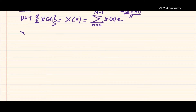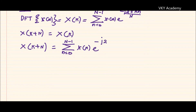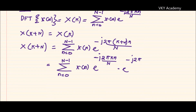Now let us check whether X(K+N) equals X(K) or not. To find capital X(K + N), we use the DFT formula: summation from n equals 0 to N minus 1 of x(n) times e to the power minus j two pi (k + N) times n upon capital N. This can be written as summation of x(n) times e to the power minus j two pi k n upon capital N, times e to the power minus j two pi capital N times n upon capital N, where N and N cancel out.